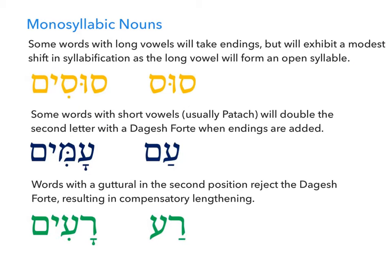Now we'll walk through a few more things we can expect to see with monosyllabic words — Hebrew nouns that consist of just a single syllable. We've got a few here: sus (horse), am (people), and ra (evil or wickedness). I don't want to spend a ton of time here, but I want to reiterate what I'll keep saying all semester: focus on what doesn't change, be aware of some of these peculiarities, and lean on the textbook examples and we should be fine.